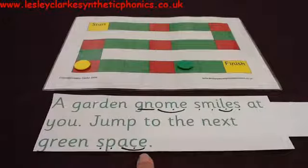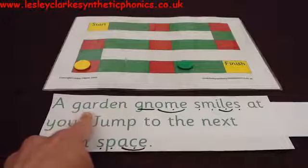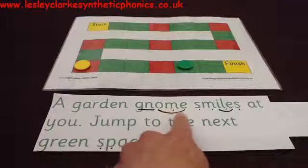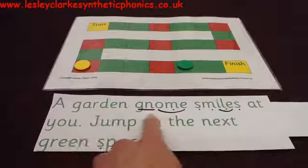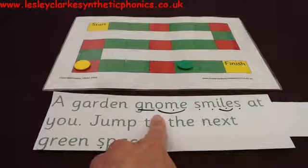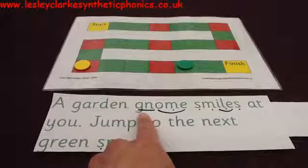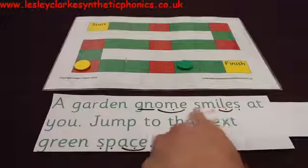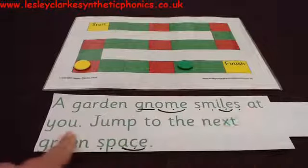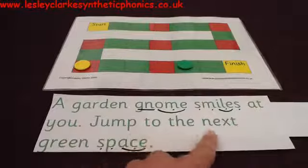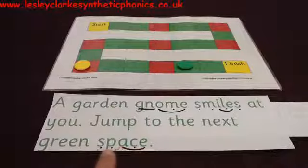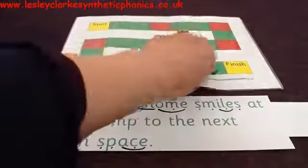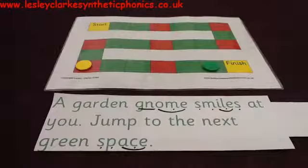Let's see what's going to happen to my counter. Let's read it together. A garden gnome is one of those little tiny sort of people that some people decorate their gardens with. They can be lots of bright colours. A garden gnome smiles at you. Jump to the next green space. I'm really sorry — I seem to be winning at the moment.